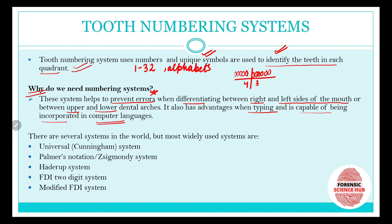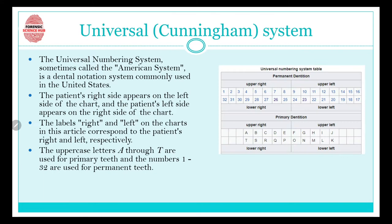There are several systems in the world, but the most widely used ones are the Universal system, the Palmer system (also known as the Sigmondi system), Haderup, FDI, and modified FDI. Out of these, the Universal, Palmer, and FDI systems are the most important and widely used. Among those three, FDI is the most widely used.